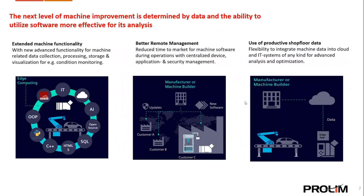The next level of machine improvements emphasizes the importance of data and advanced software in driving machine enhancements, with the main goal being more effective software for analyzing machine data. The first section, extended machine functionality, focuses on new advanced functionality for machines, particularly data collection such as condition monitoring, process storage, and visualization. Technologies mentioned include Edge computing, open source, and various programming languages and tools such as C++, HTML5, and SQL, demonstrating integration of IT, AI, Edge computing, and various software tools to enhance machine functionality.